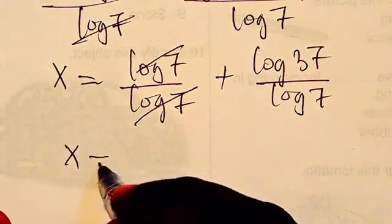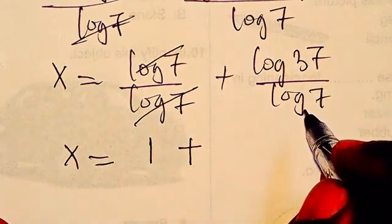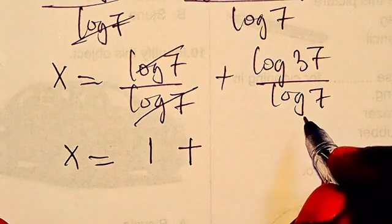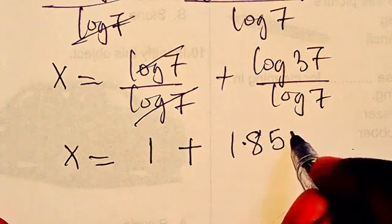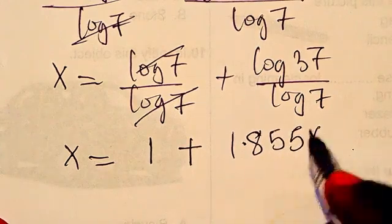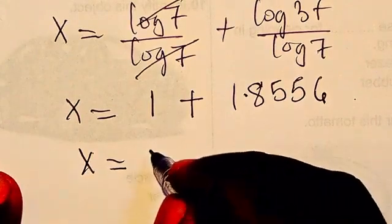And that's the answer from there. So you can see that this we cancel, so we have x equals 1 plus log 37 divided by log 7. When you press your calculator you're going to have 1.8556 approximately to four decimal places. Then when you add it up you're going to have 2.8556, and that is the solution.